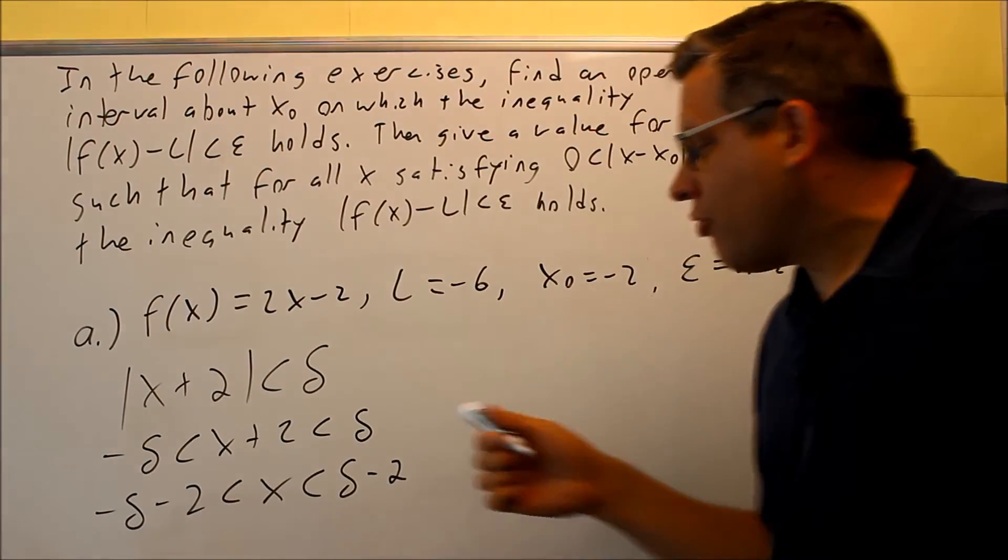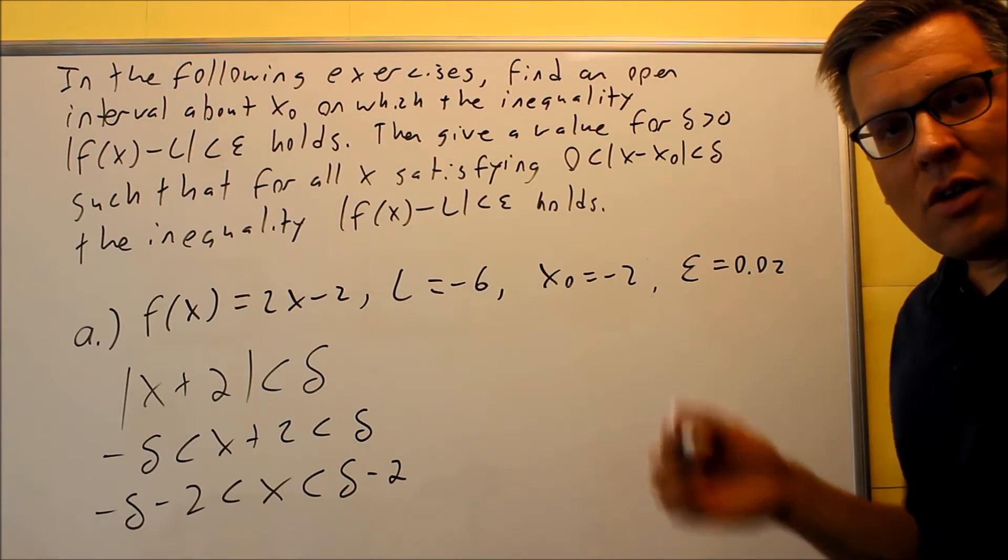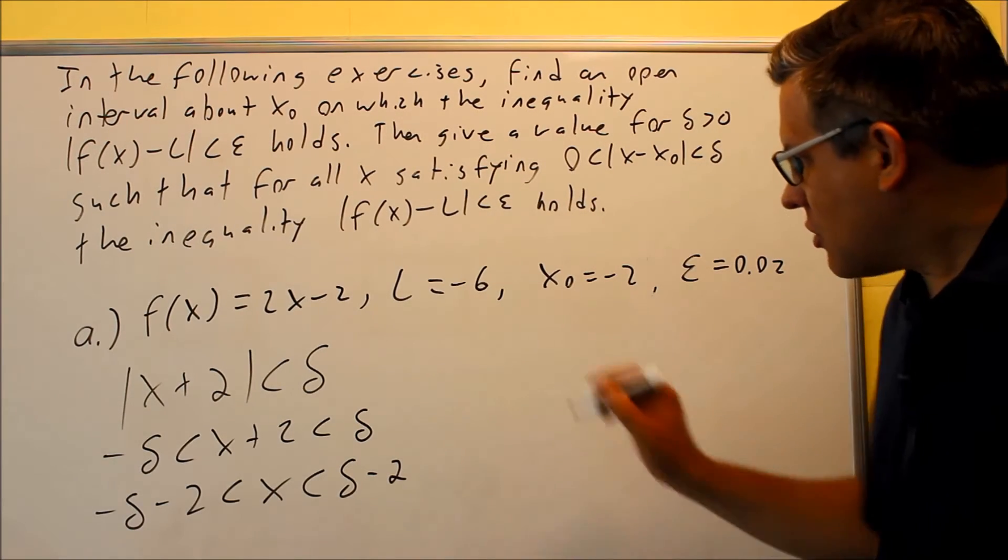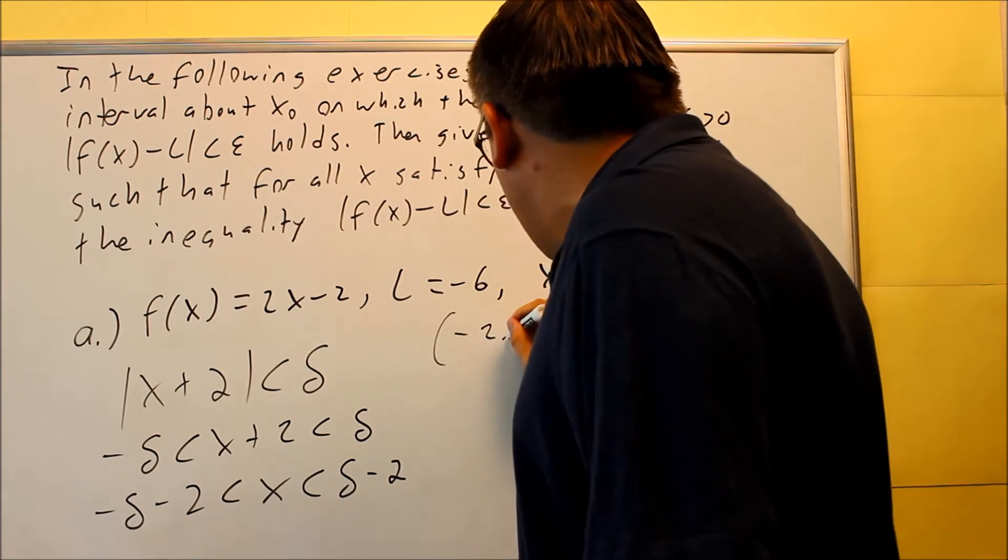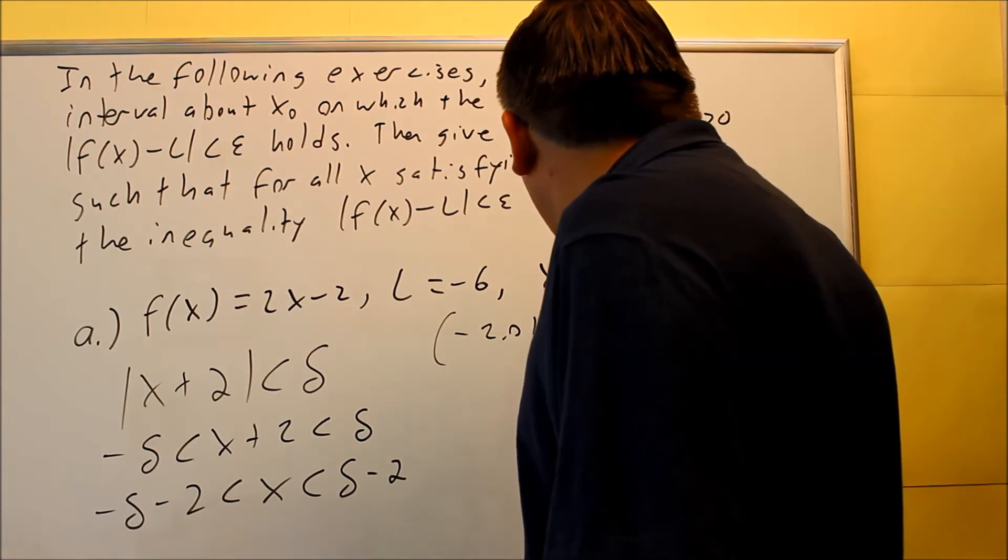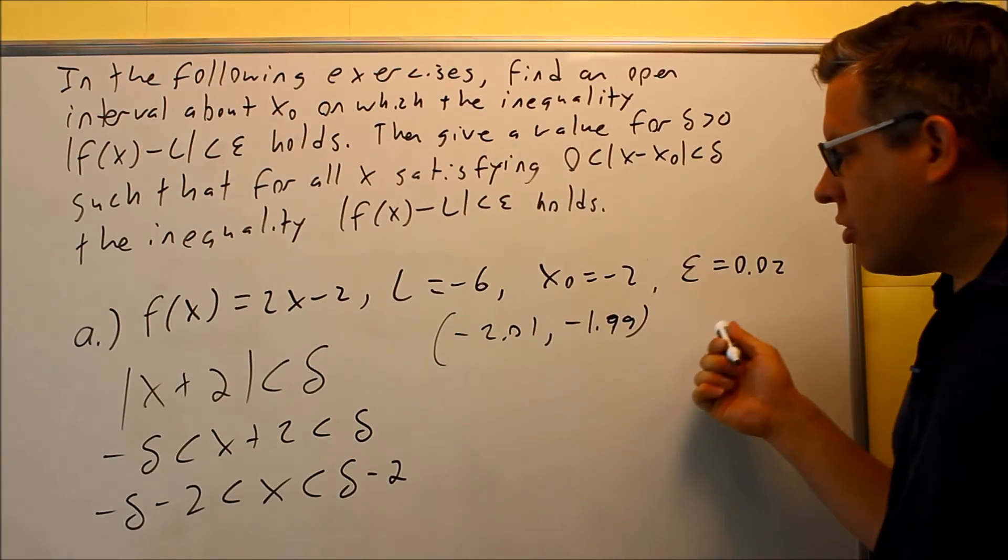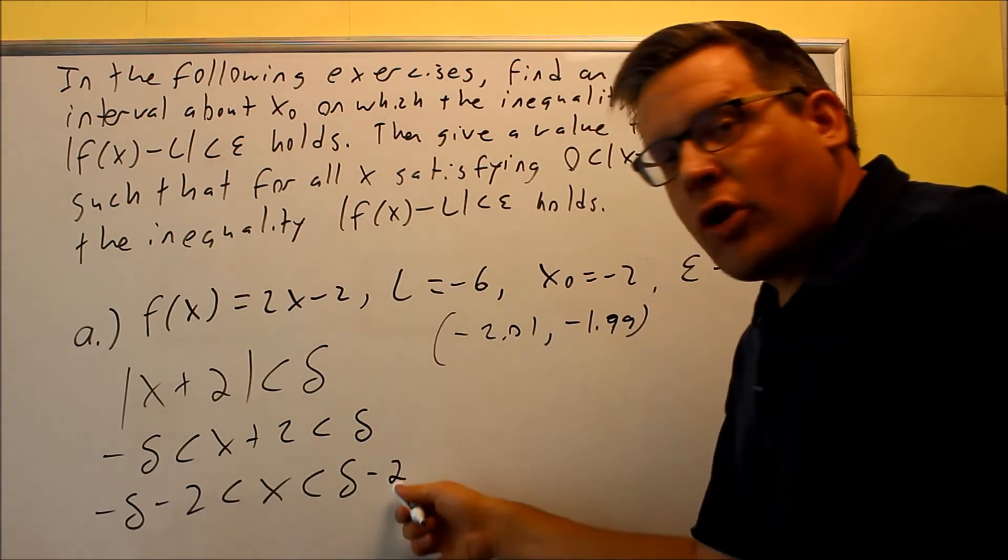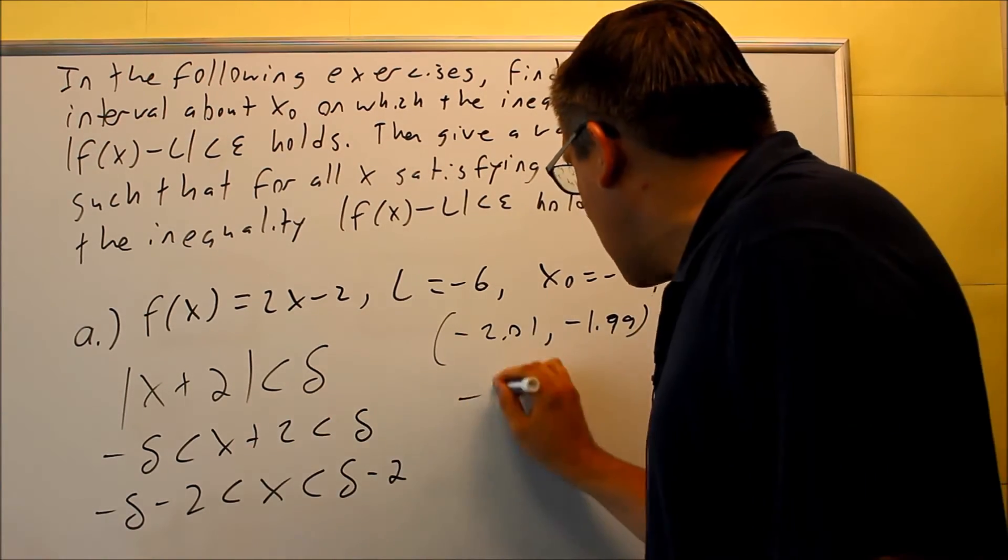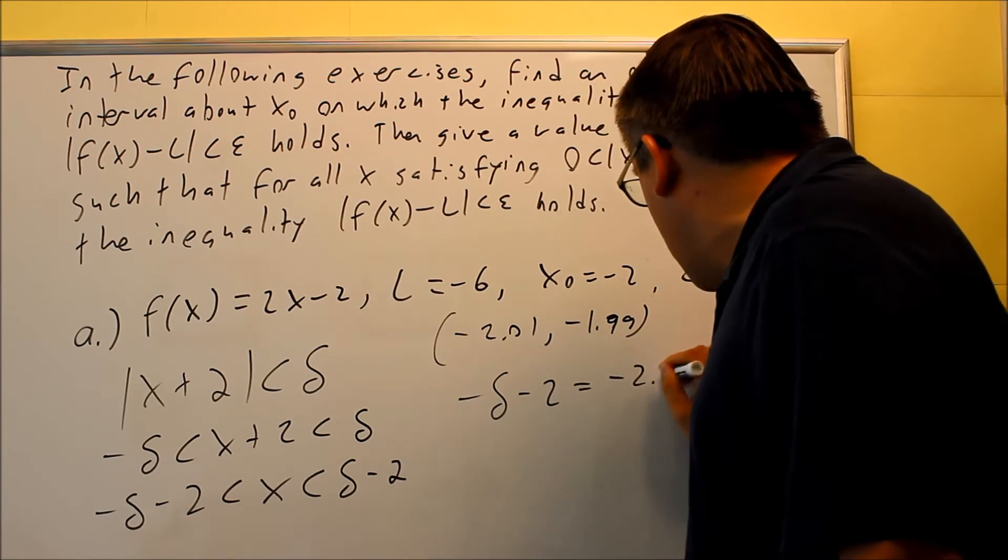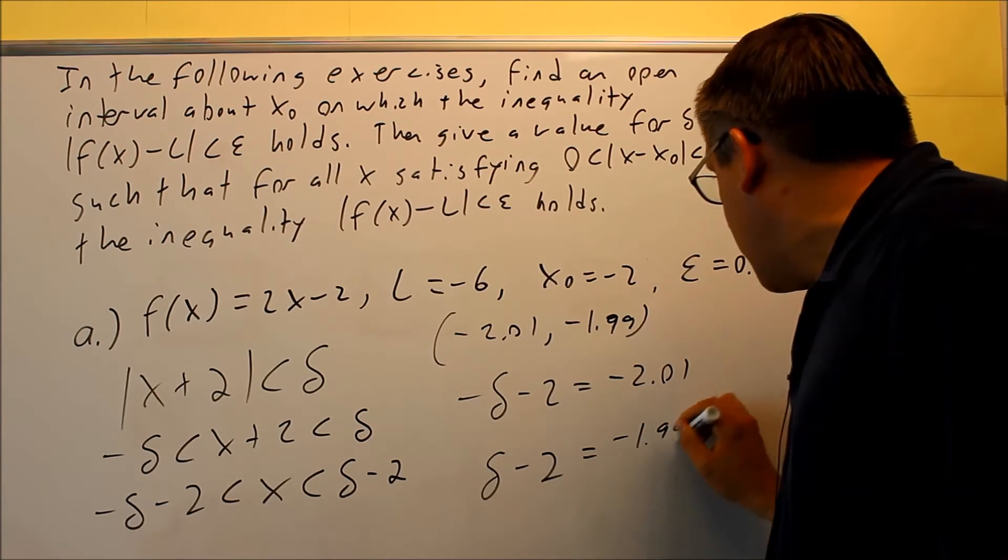Okay, so you're just subtracting 2 from every place because you want to get x by itself. So now, what you're going to do to solve this is previously, we already solved this and we got our interval here, negative 2.01, negative 1.99. So what you're going to do is each of these endpoints here, you're just going to set to each of these. So we're going to take negative delta minus 2, set that equal to negative 2.01, and then delta minus 2 is going to be equal to negative 1.99.